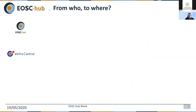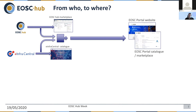To understand where we're going, we have to understand where we've come from. Both EOSCub and InfraCentral projects have been onboarding providers and services in the past, feeding into their own catalogues — the EOSCub marketplace and the InfraCentral catalogue. There was then a request from the EC, somewhat unexpected but a positive move, to create EOSC portals and combine these two different listings of resources into a single space. This is what we see with the EOSC portal website and the EOSC portal catalogue and marketplace.